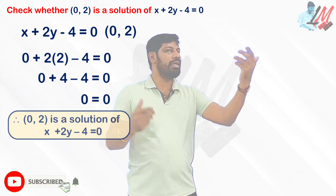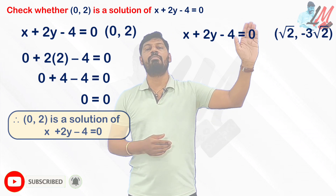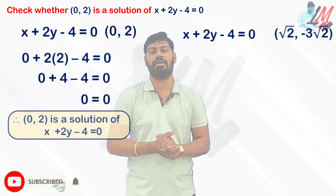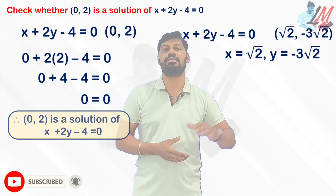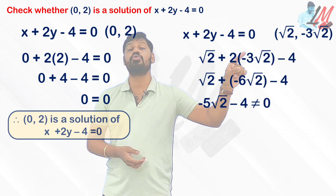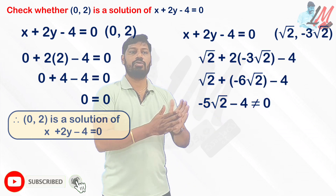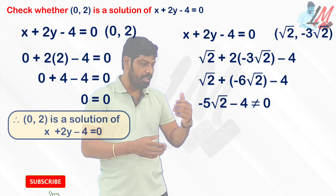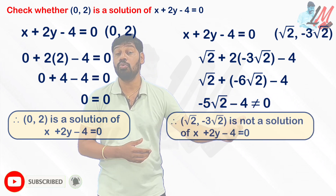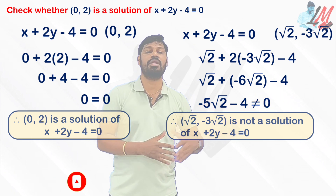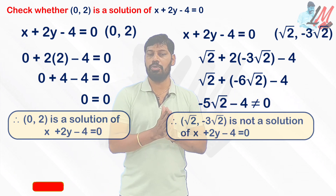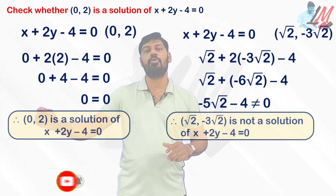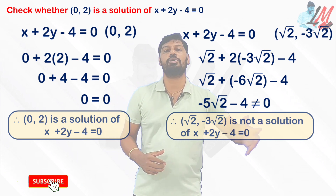Now let's check another pair. Substituting x equals root 2 and y equals minus 3 root 2 into x plus 2y minus 4 equal to 0. We get root 2 plus 2 of minus 3 root 2 minus 4. Simplifying this does not equal 0 — it is simply not equal to 0. Therefore, root 2 and minus 3 root 2 is NOT a solution of the given equation x plus 2y minus 4 equal to 0.